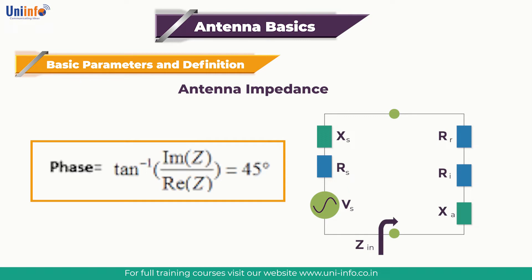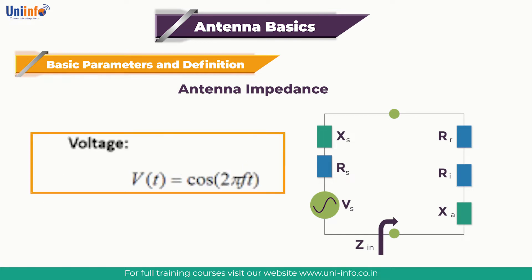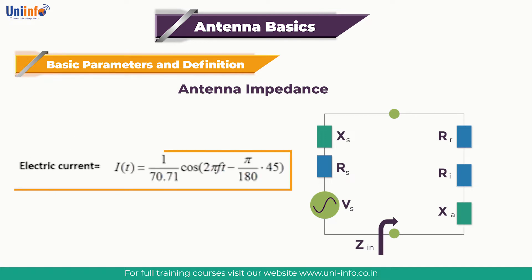That is, the current waveform is delayed relative to the voltage waveform. If the voltage with frequency at the antenna terminals is given, the electric current can then be calculated accordingly. Hence, antenna impedance is a simple concept — it relates the voltage and current at the input to the antenna.